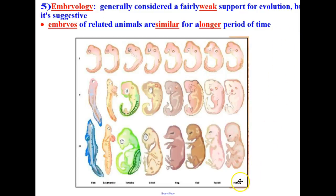If we compare, for example, these embryos for the fish, salamander, tortoise, chick, hog, cat, rabbit, and human, what this is saying is that as you start out here, seeing how they're all similar, embryos of related animals are similar for a longer period of time during the development.